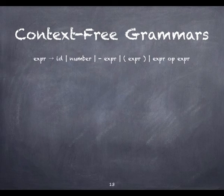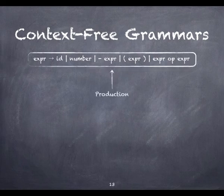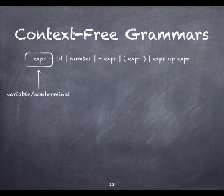Each of the rules in a context-free grammar is known as a production. The symbols on the left-hand side of the productions are known as variables, or non-terminals. There may be any number of productions with the same left-hand side.